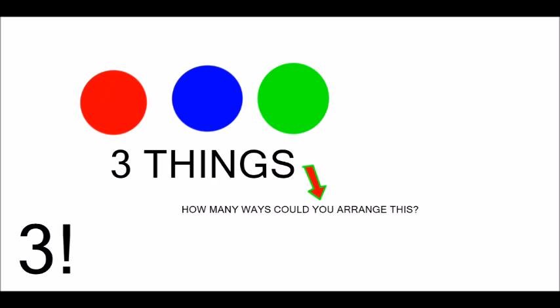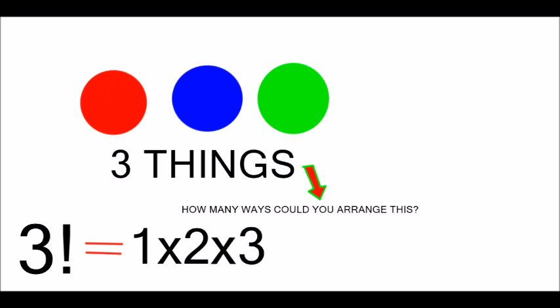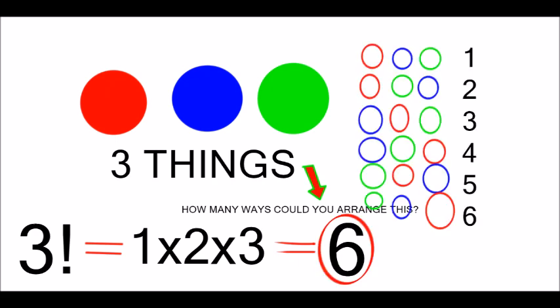To do any factorial, what you do is you multiply all the positive whole numbers before it, and then itself. So three factorial would be one times two times three. That makes six, so therefore you could arrange three things six different ways — count them up, they're all right there.